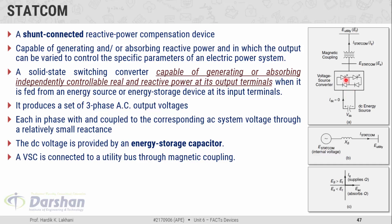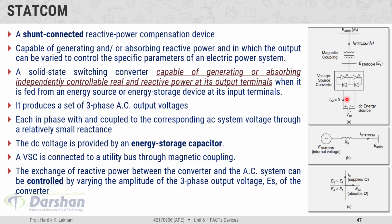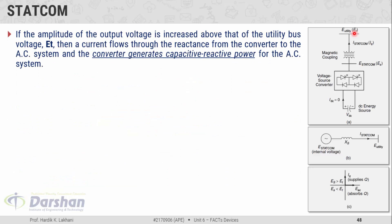The voltage source converter is connected to the utility bus through this magnetic coupling, which is the coupling transformer. The exchange of reactive power between the converter and the AC system can be controlled by varying the amplitude of the three-phase output voltage ES of the converter. This magnitude can be controlled by controlling the power semiconductor devices used in the construction of the voltage source converter. If the amplitude of the output voltage is increased above that of the utility bus voltage, then current flows through the reactance from the converter to the AC system, and the converter generates capacitive reactive power for the AC system.